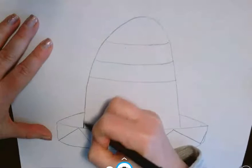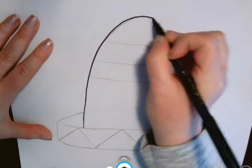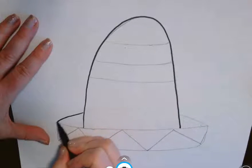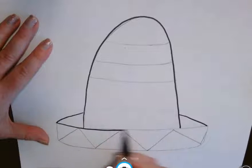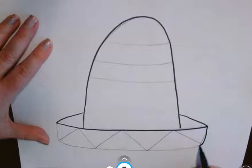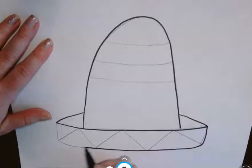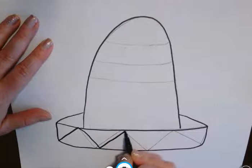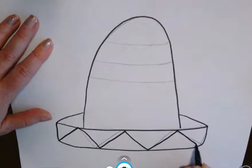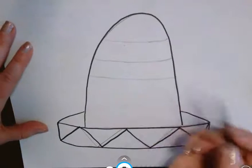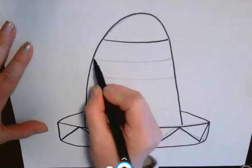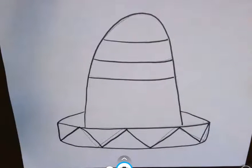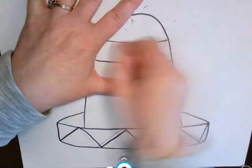All right, when you're happy with your sombrero, you're going to take your dark colored crayon or marker and you're going to go over all of those lines. All righty, maybe these up here too. And you're going to take your eraser, you can erase all those extra lines.